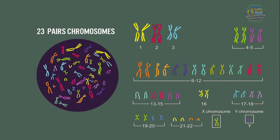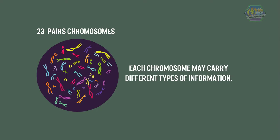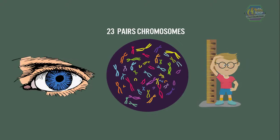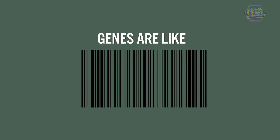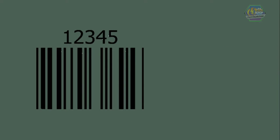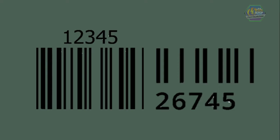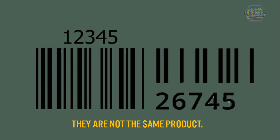Although we have 23 pairs of chromosomes in each cell, each chromosome may carry different types of information. One chromosome may carry eye color and height information, and another may determine blood type. Genes are like the barcode in your grocery store — each barcode has a different sequence, like one barcode with the sequence 1-2-3-4-5 versus another with 2-6-7-4-5, telling you they are not the same product.